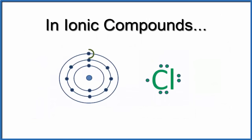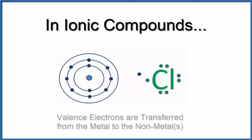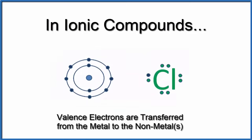It's important to note that in ionic compounds, the metal will transfer those valence electrons to the nonmetal, and this influences how we write Lewis structures for ionic compounds.